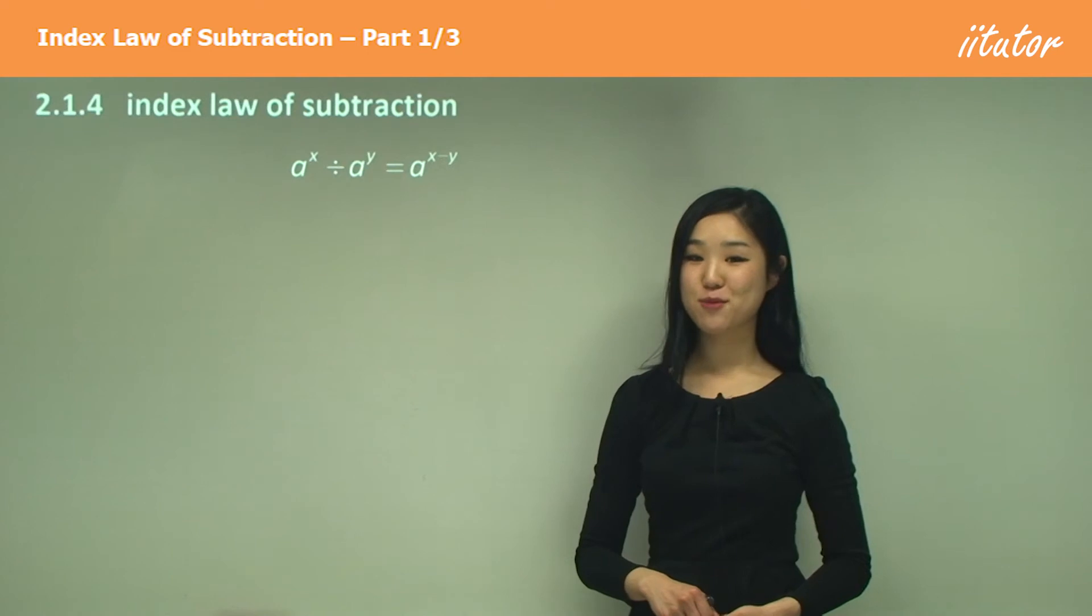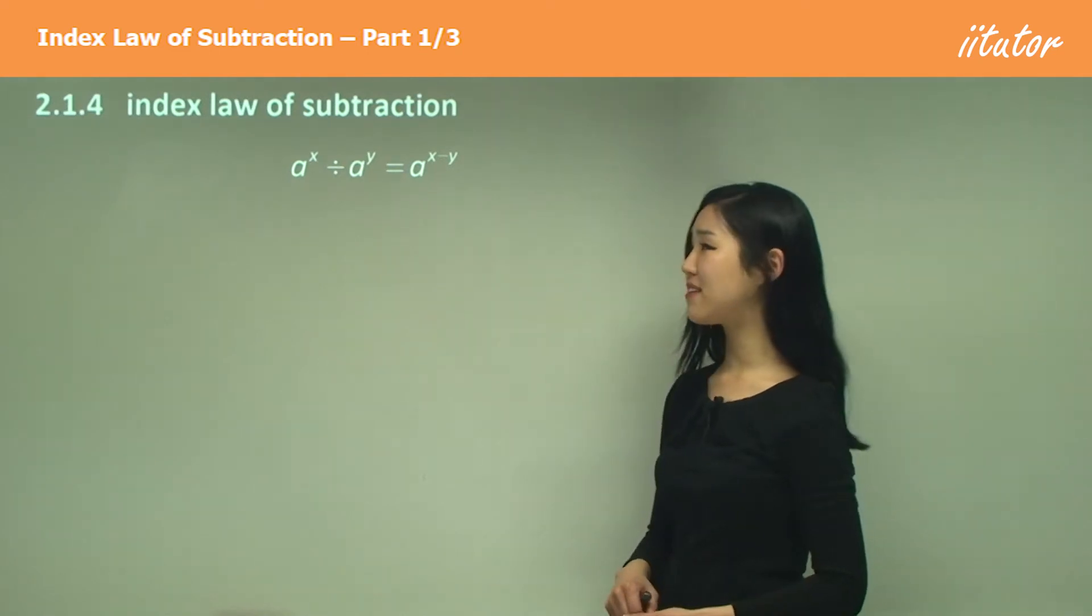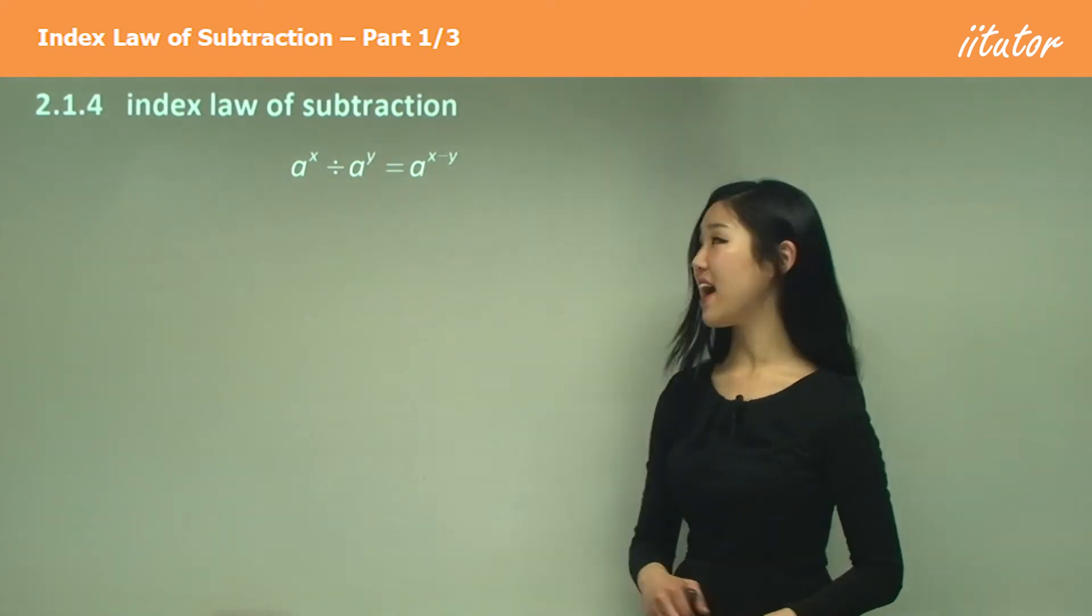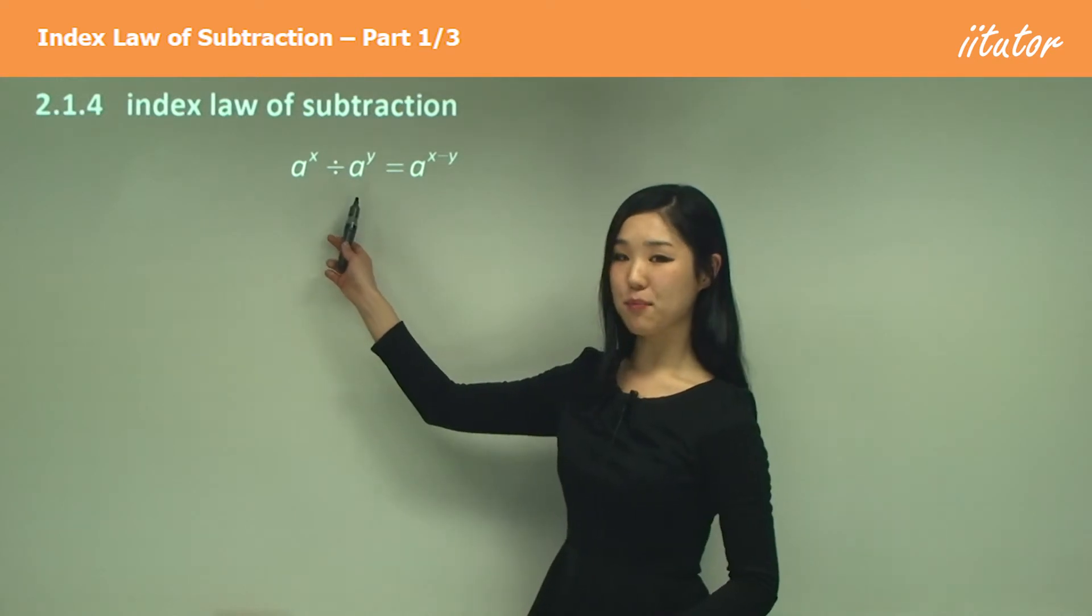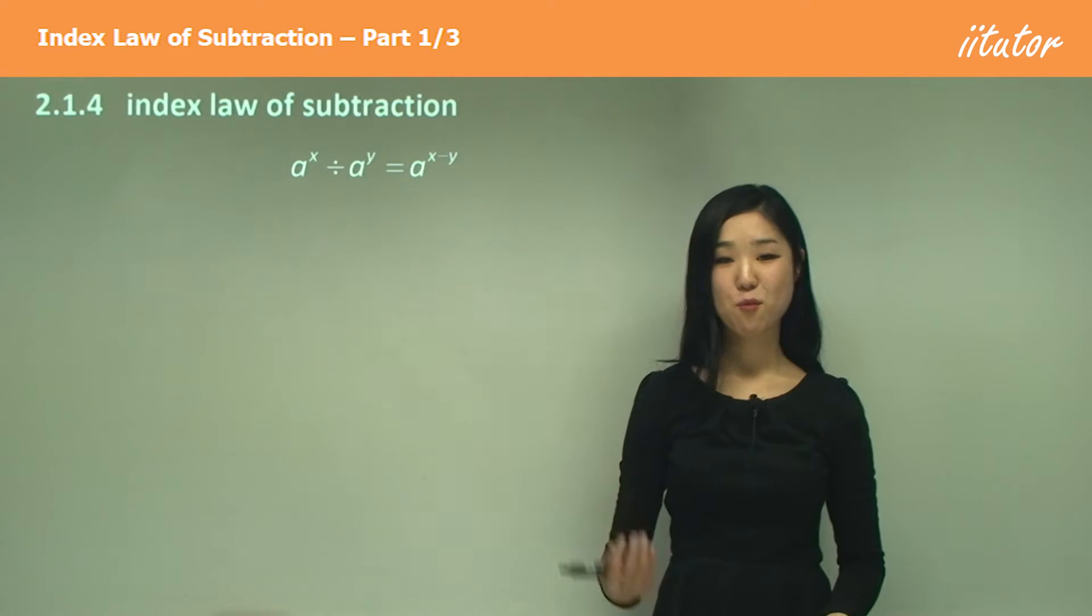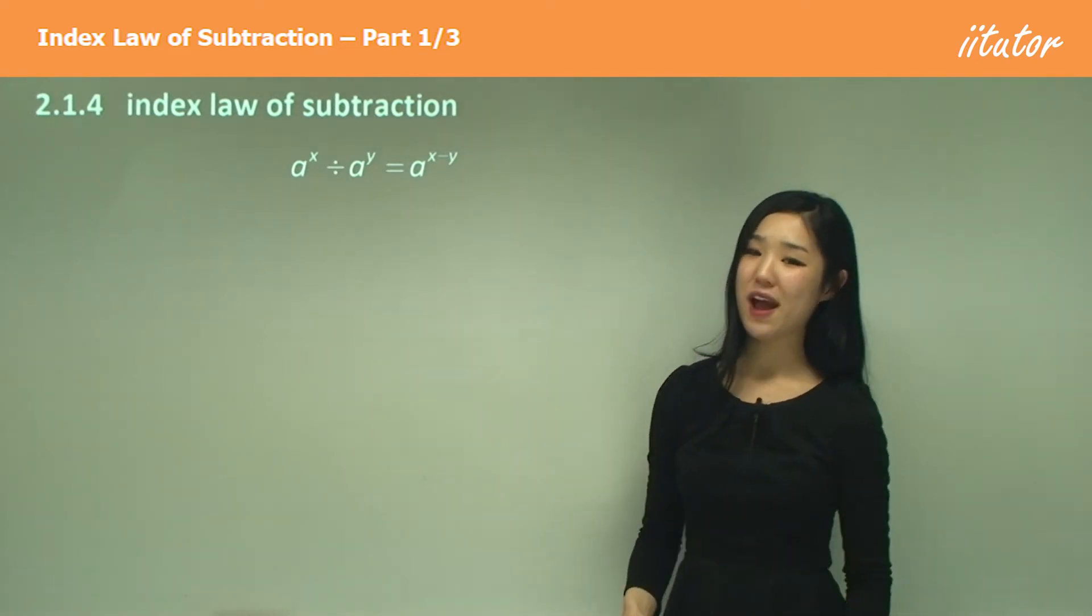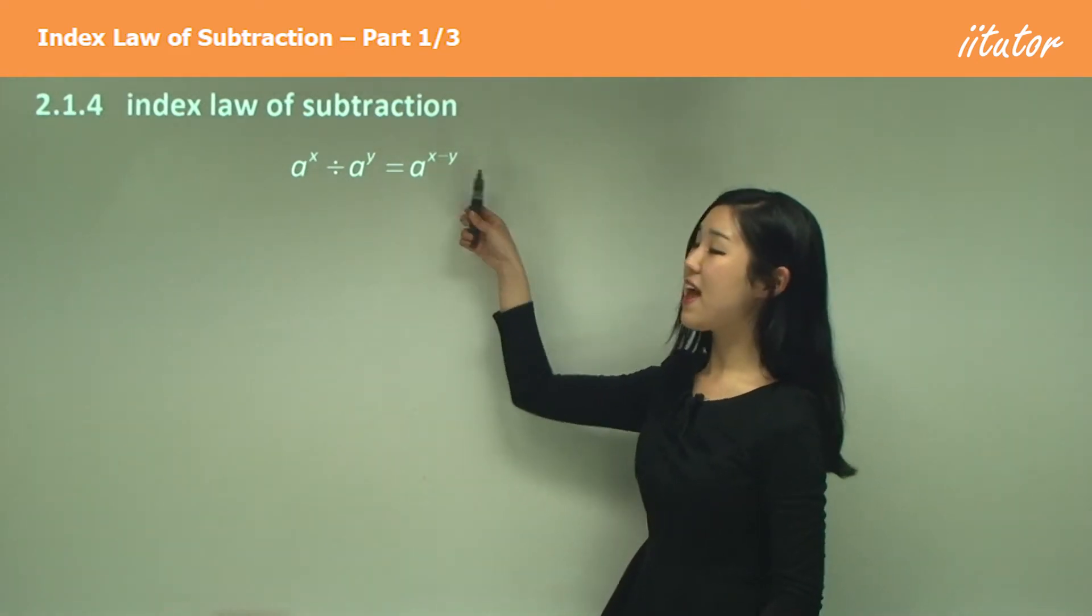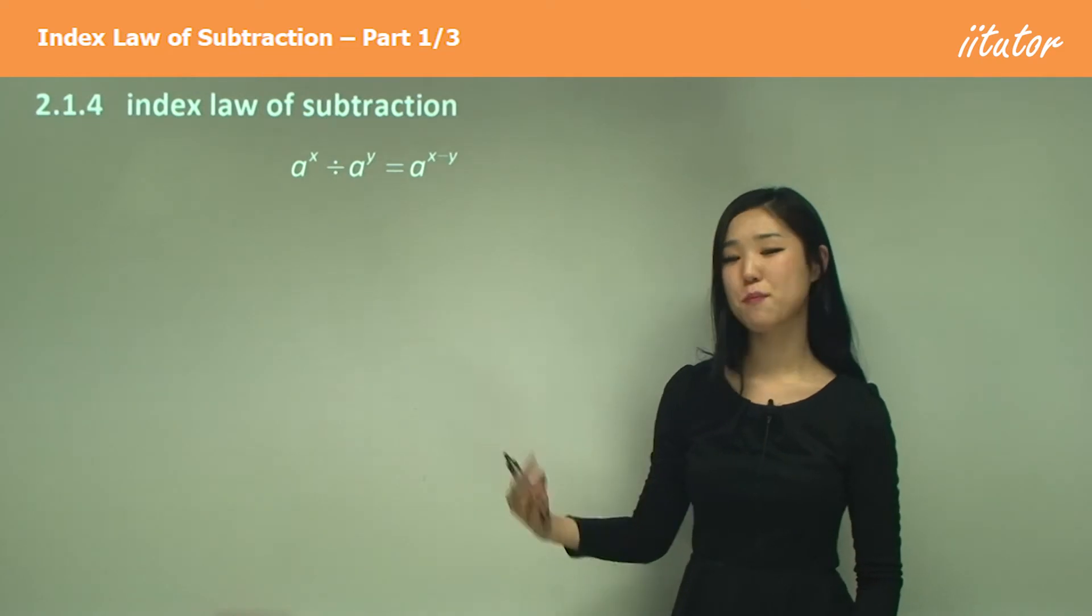Now let's do the law of subtraction. It's a similar pattern, but the only difference is that when we're dividing a to the power of x with a to the power of y, we simply subtract the indices. So we have to put x minus y on the power of a.